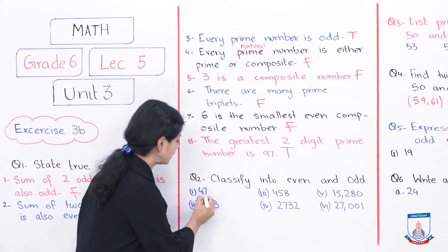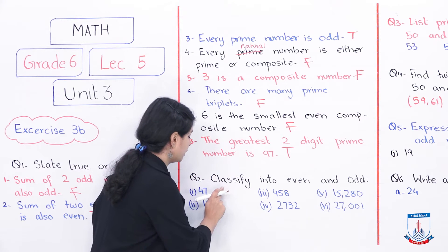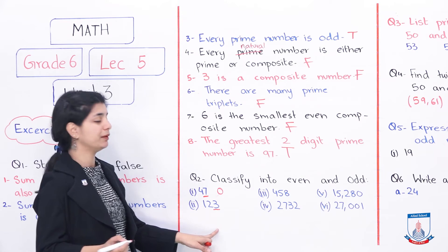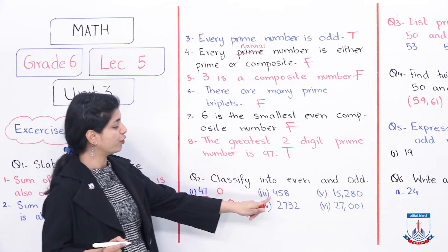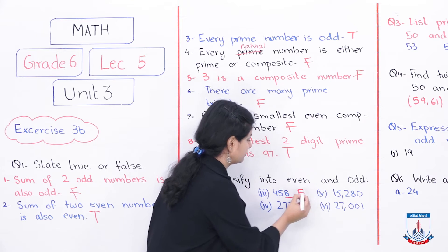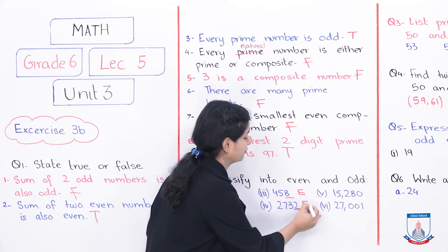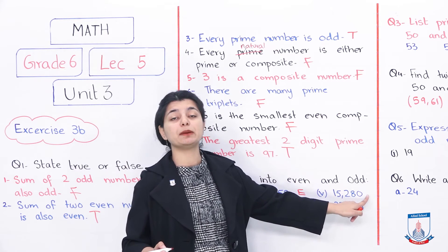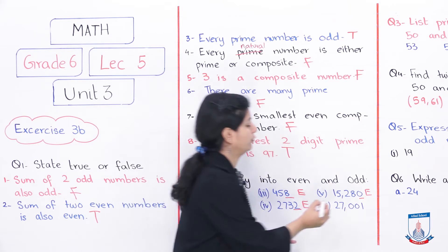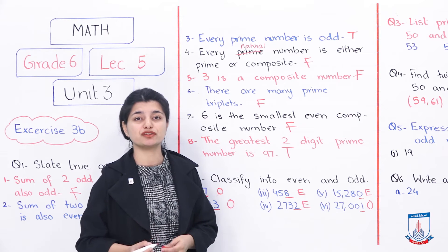Working through the examples: 147 ends in 7, which is odd, so 147 is odd. 123 ends in 3, which is odd, so 123 is odd. 458 ends in 8, which is divisible by 2, so it is even. 2,732 ends in 2, so it is even. 15,280 ends in 0, so it is even. 27,001 ends in 1, which is odd, so it is odd. That's how you classify them.